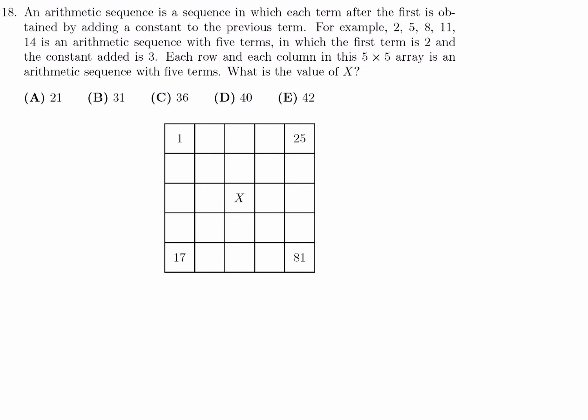An arithmetic sequence is a sequence in which each term after the first is obtained by adding a constant to the previous term. For example, 2, 5, 8, 11, and 14 is an arithmetic sequence with 5 terms, in which the first term is 2, and the constant added is 3. Each row and each column in this 5x5 array is an arithmetic sequence with 5 terms. What is X? Well, this is A, this is A plus D, this is A plus 2D, this is A plus 3D, and this is A plus 4D.